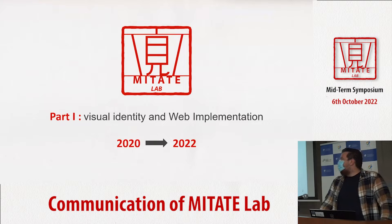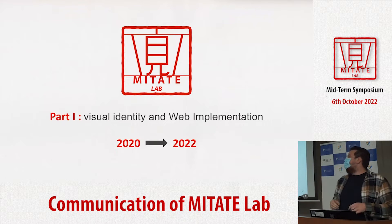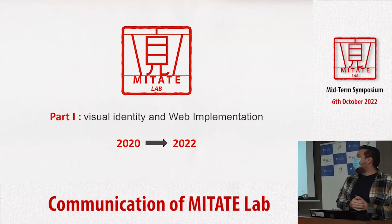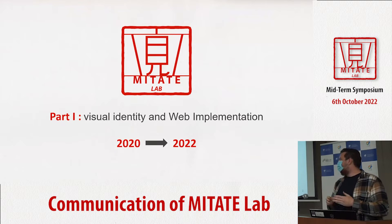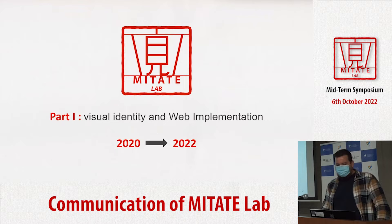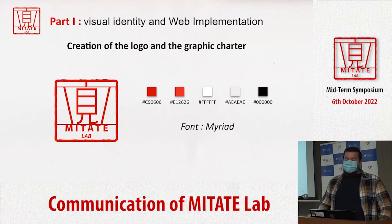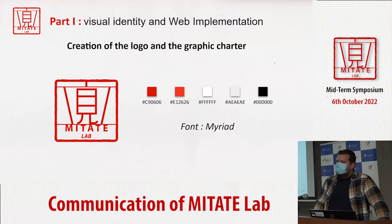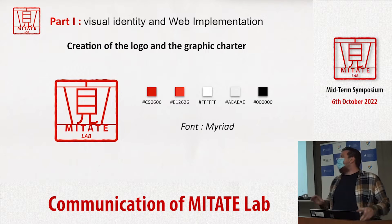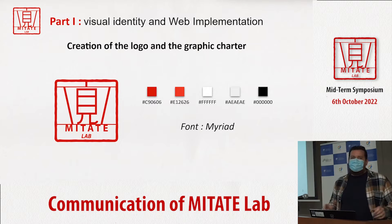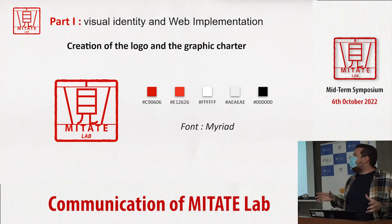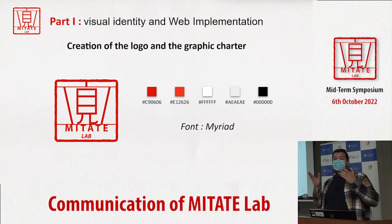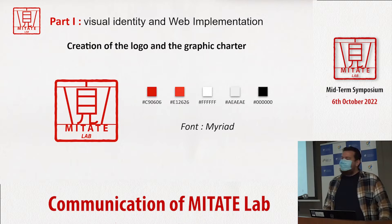The actions implemented so far are part of the first part of the communication plan, which consists in the creation of the visual identity of the project and its web implementation. The first step was to create a project logo, so the communication around the project will be easily recognizable, trying to convey the international aspect of the project and its host country.